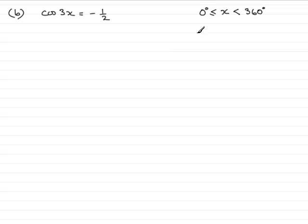In order to do this, we've just got to take the inverse cosine of both sides, so therefore we would have 3x equals the inverse cosine or inverse cos of negative a half.